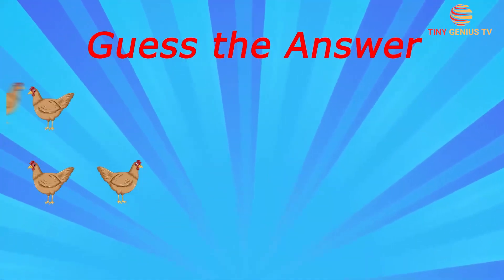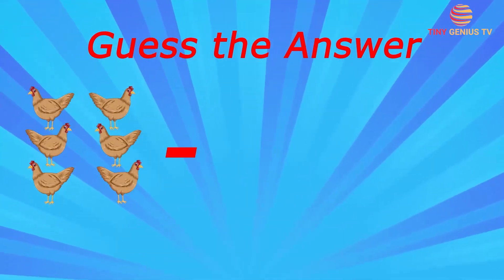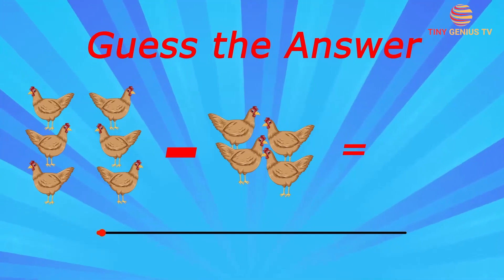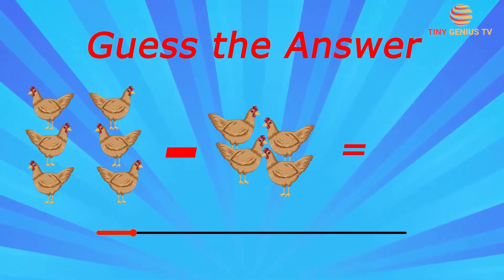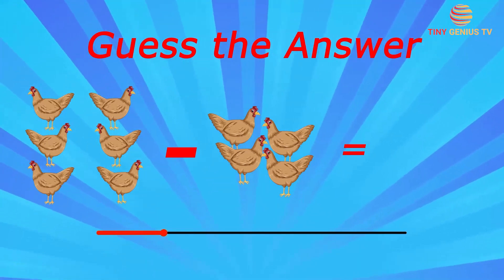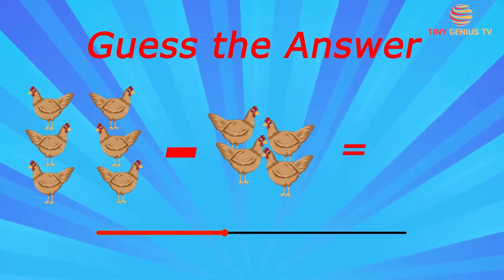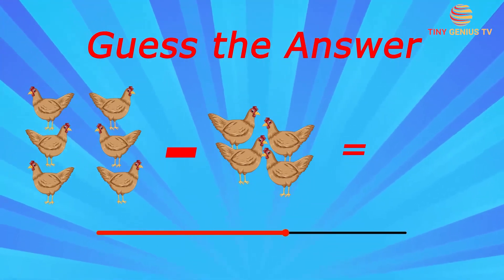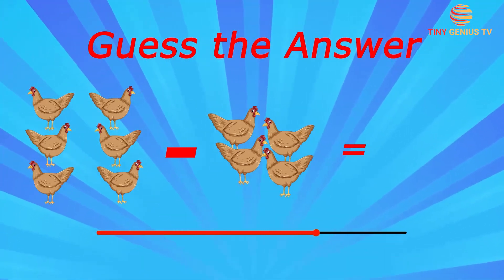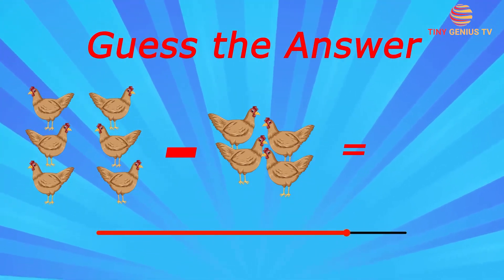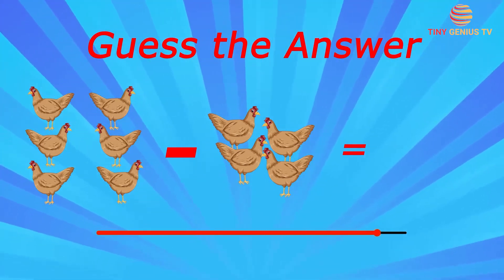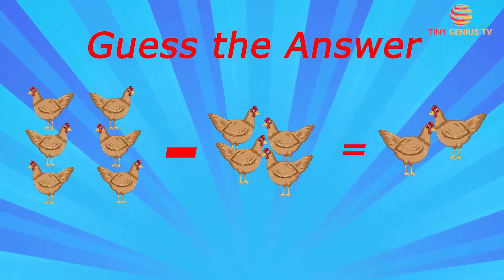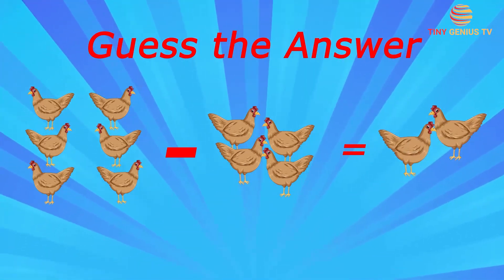There were six chickens in a farm and four of them are now gone. How many chickens are left in the farm? Two chickens are left in the farm.